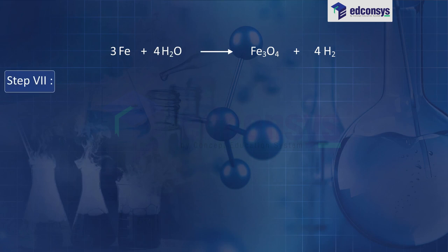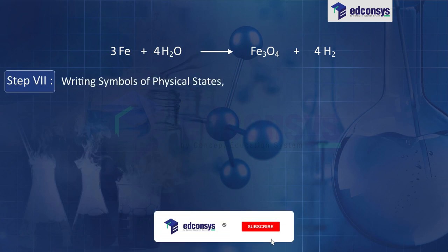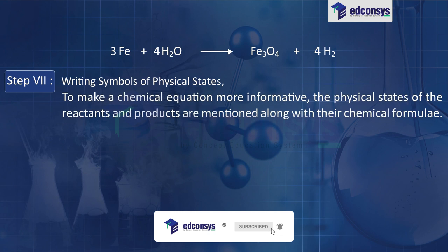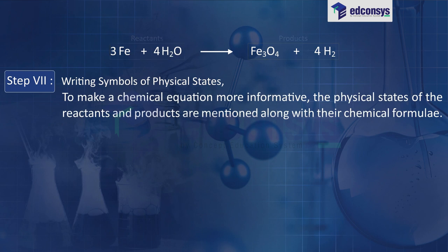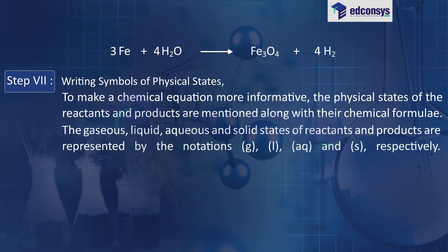Step 7: writing symbols of physical states. To make a chemical equation more informative, the physical states of the reactants and products are mentioned along with their chemical formulae. The gaseous, liquid, aqueous, and solid states are represented by the notations g, l, aq, and s respectively.